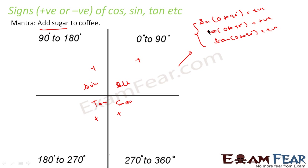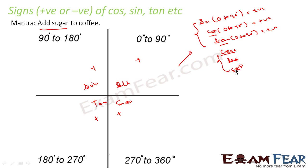So sine, cos, tan, cosec, sec, and cot are all positive in the first quadrant. I won't go into cosec, sec, and cot separately because if sine is positive, then 1/sine (cosec) is always positive. If cos is positive, then 1/cos (sec) is also positive. If tan is positive, then 1/tan (cot) is also positive. So whatever behavior we get for sine, cos, and tan, the same behavior applies to cosec, sec, and cot.